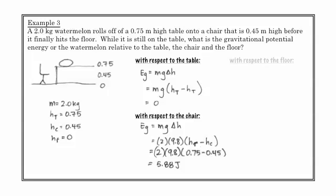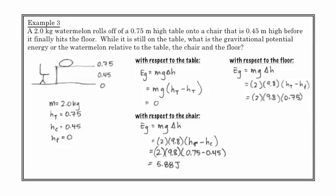And if we measure the change in potential energy with respect to the floor, so from the table to the floor, what we get is we get mg delta h. And of course, that delta h represents a distance between the table and the floor, which of course is 0.75 meters. And we get a little bit larger energy, 14.7 joules.